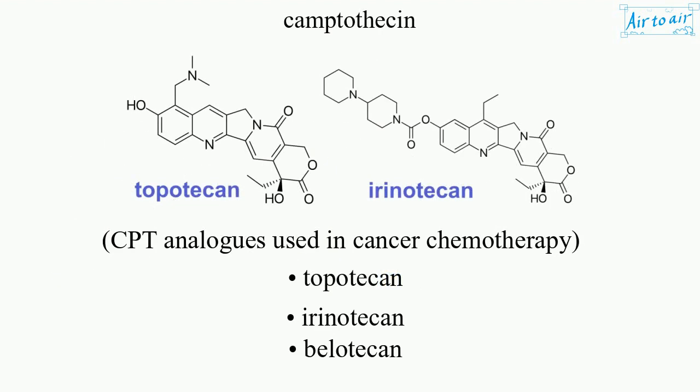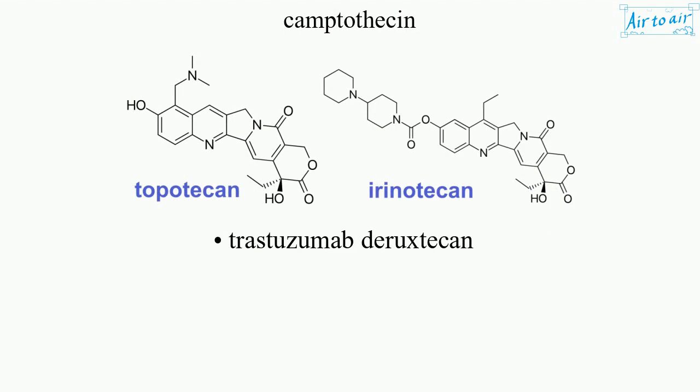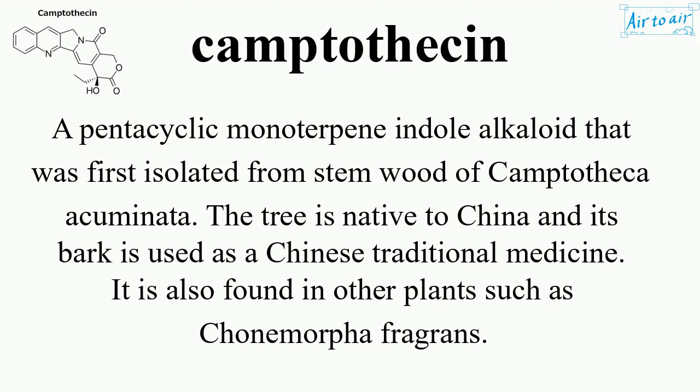Camptothecin analogues used in cancer chemotherapy: topotecan, irinotecan, belotecan, and trastuzumab deruxtecan.